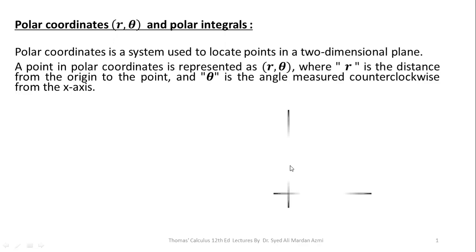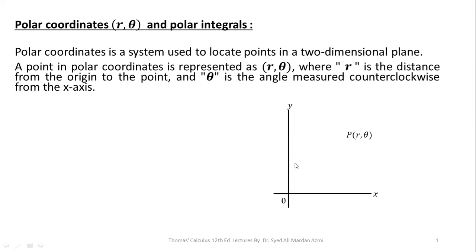A polar coordinate system is a system which is used to locate a point in a two-dimensional plane. A point in polar coordinates is represented by r and theta, where r is the distance of the point from the origin and theta is the angle measured in the counterclockwise direction with the positive x-axis. So here in this diagram, if P is a point, then its distance from the origin will be the value of r, and if you calculate the angle of this point with the x-axis in the counterclockwise direction, then it will give you the value of theta.